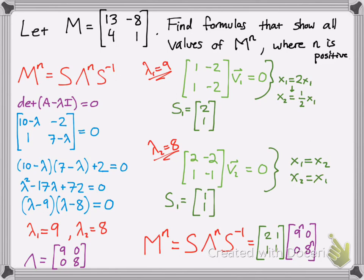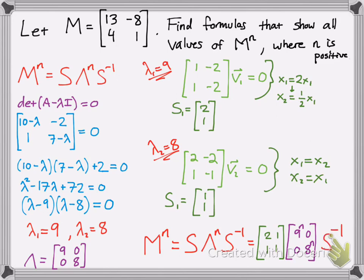When you're diagonalizing a matrix and raising it to a power, the eigenvalues are those that get affected by the raised exponent. And then you multiply it all out to get the matrix that you're looking for. But we still need to find S inverse.